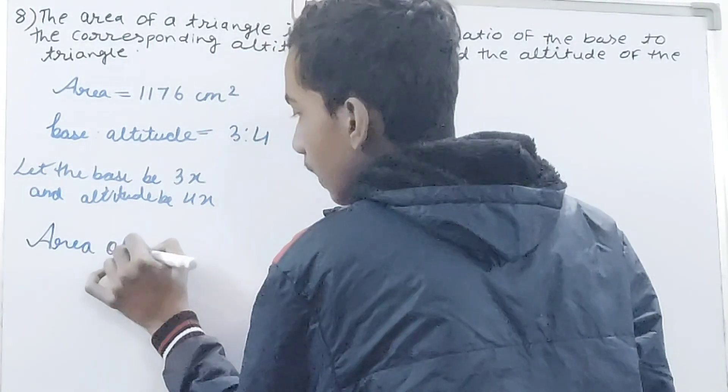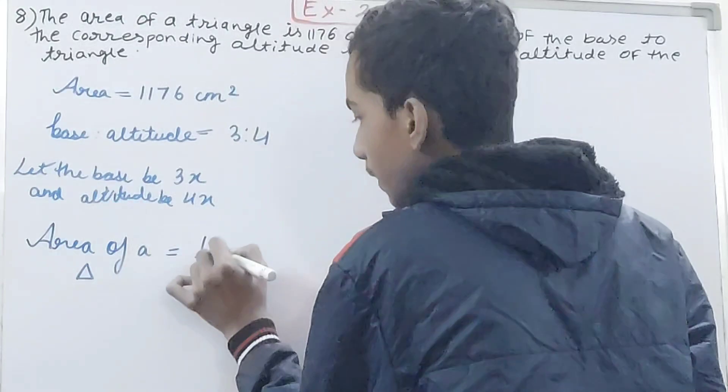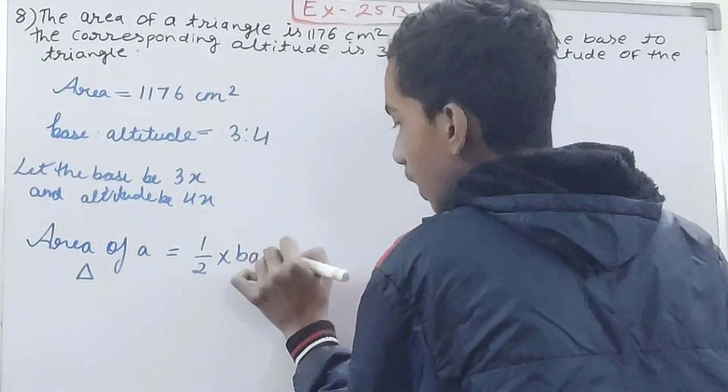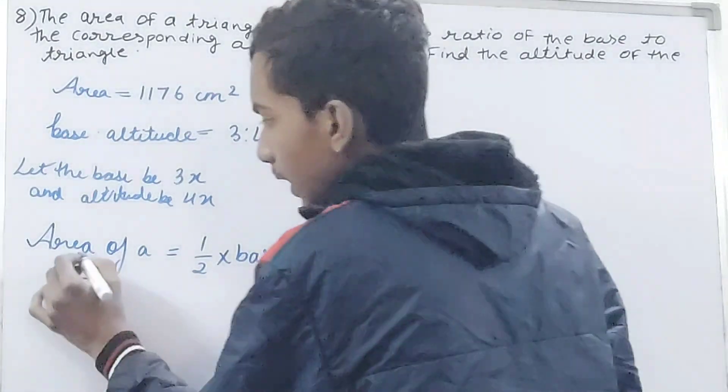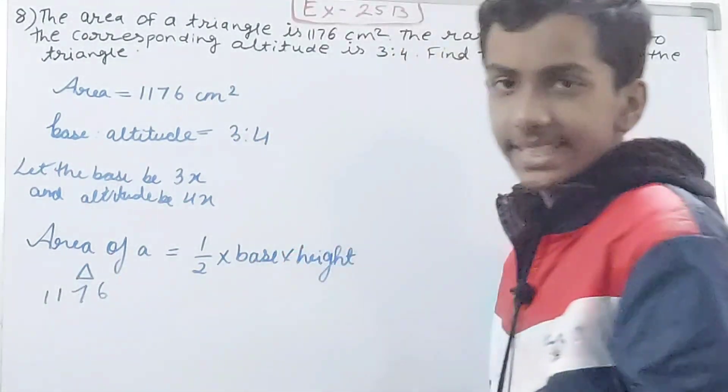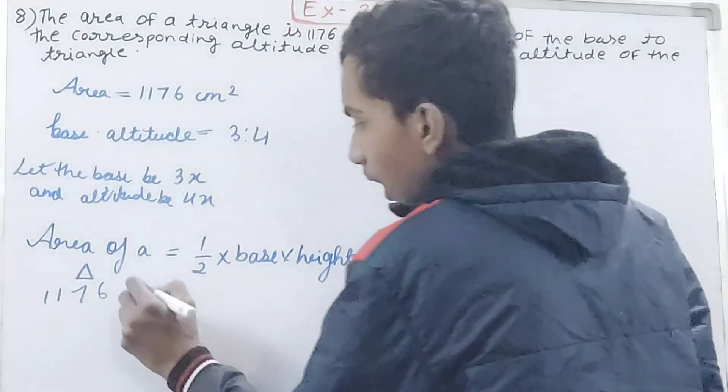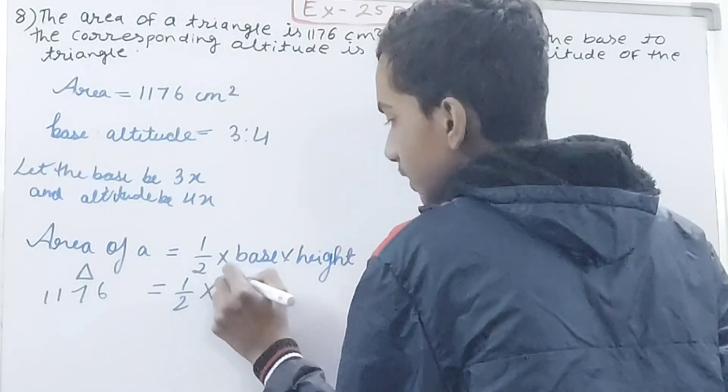Area of a triangle is equal to ½ into base into height. So what we will have: area of the triangle we have got as 1176, and then half into base was 3x, height was 4x, so put that down here.